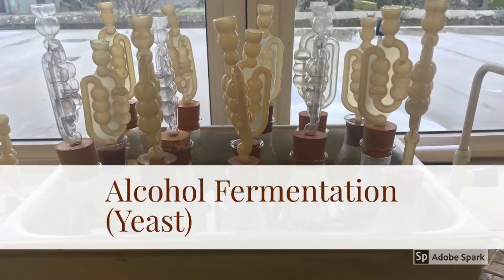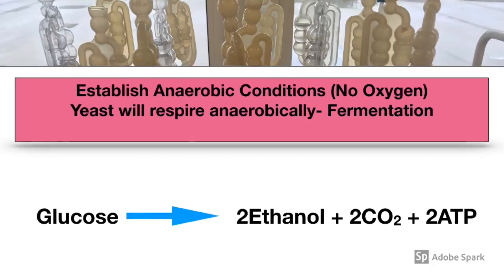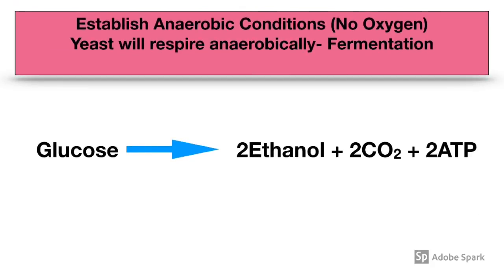This video is to help you revise the practical where you investigated alcohol fermentation — the production of alcohol by yeast. The whole point of this practical is to establish anaerobic conditions, so the removal of oxygen. Under anaerobic conditions, yeast will respire anaerobically to produce alcohol. This is known as alcohol fermentation.